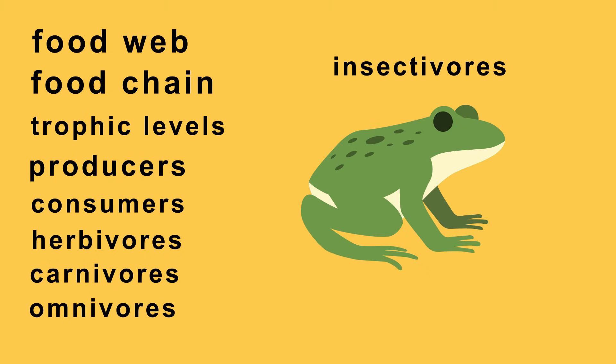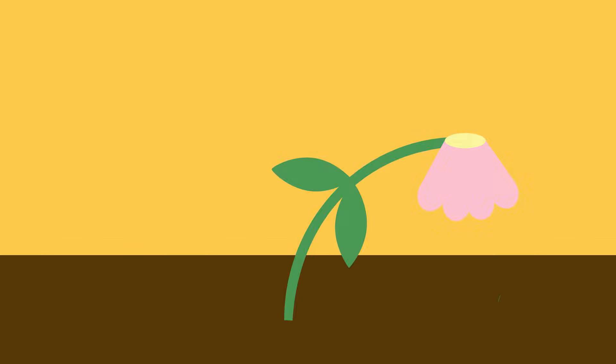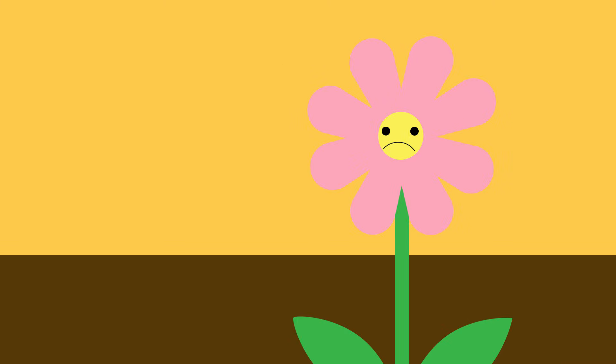Decomposers break down dead plants and animals and waste and return nutrients back to the soil. Decomposers are very important for an ecosystem. If they weren't there the plants would not get essential nutrients and dead matter and waste would pile up.